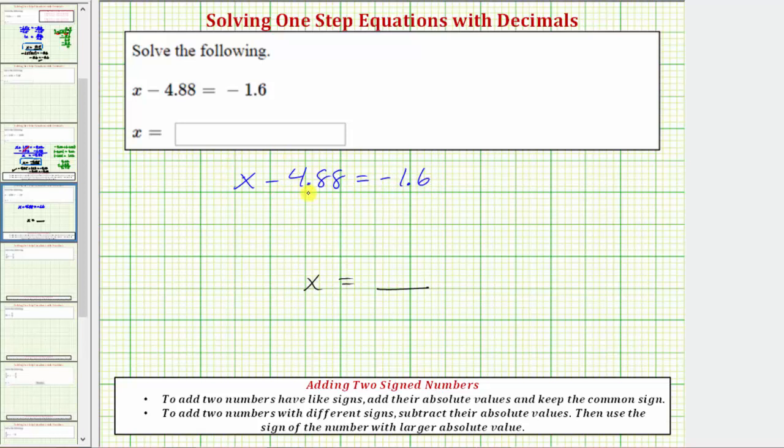Looking at the left side of the equation, we don't want this minus 4.88 here with x, and therefore we need to undo this subtraction by performing the inverse or opposite operation.